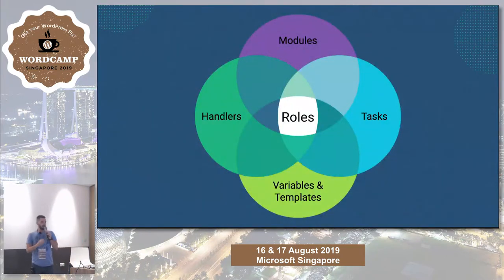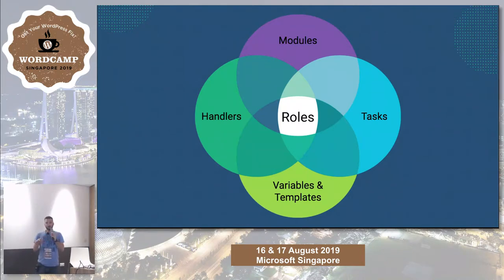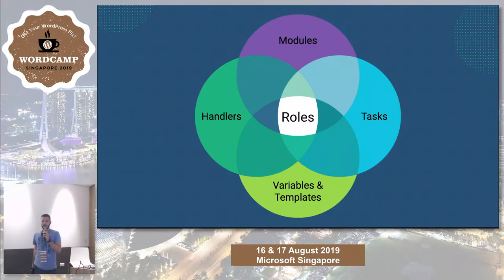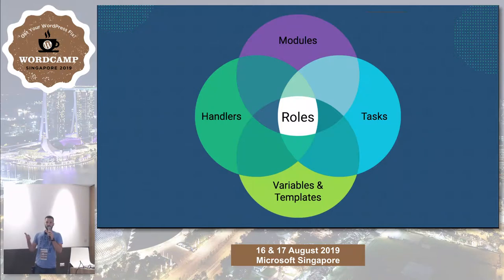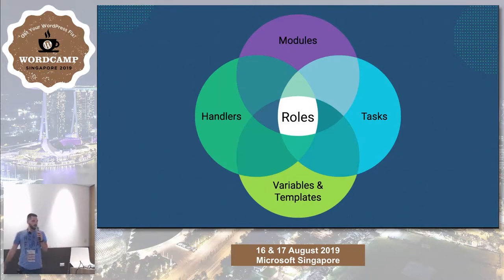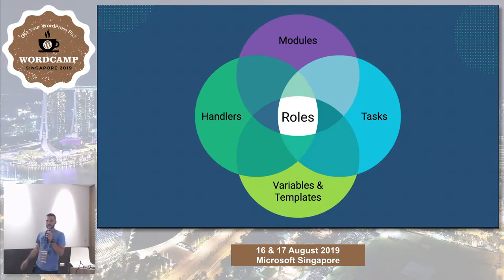Roles are a combination of all the parts mentioned so far. They are a comfortable way to group tasks, variables, and modules related to one server service. For example, to install and configure Apache from beginning to end, you would have tasks for downloading the package, installing it, adjusting vhosts, and configuration files. All these tasks can be grouped into one single role, which is called with just one line instead of calling each task separately in your playbook.